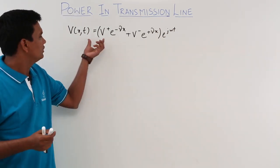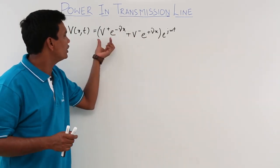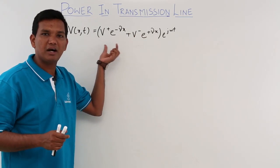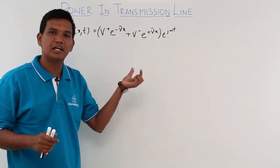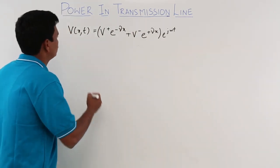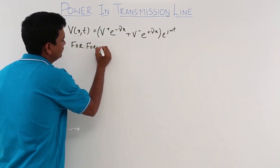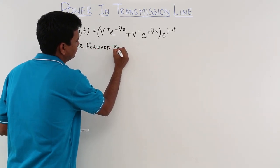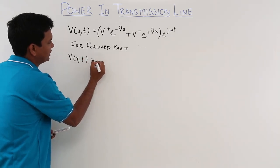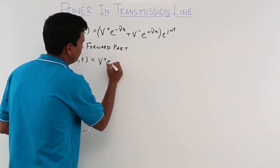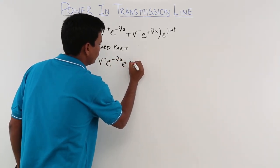This equation consists of two parts: one where voltage is travelling forward and another where voltage is travelling backward. I am going to take the part where the voltage is travelling forward. So for the forward part, v(x,t) = V+ e^(-γx) · e^(jωt).